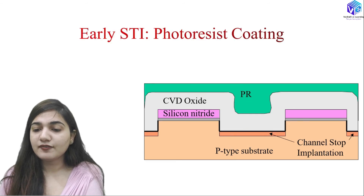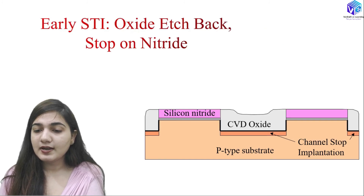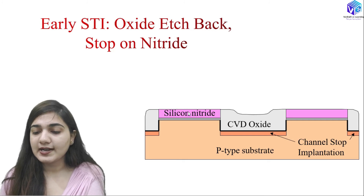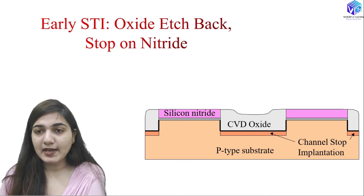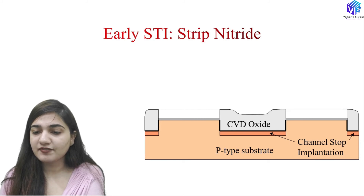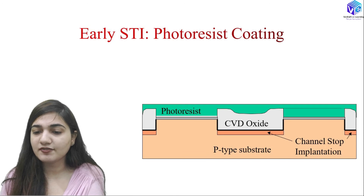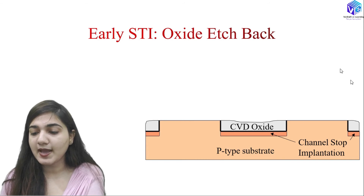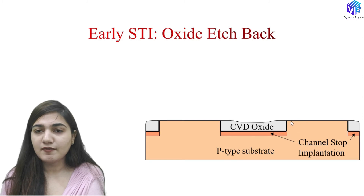After channel stop implantation, we perform CVD oxide growth using chemical vapor deposition to grow the oxide layer. Then we apply a photoresist coating. After that, we strip the photoresist and perform oxide etch-back, stopping on the silicon nitride. When we reach the silicon nitride interface, that is our endpoint. After that we can strip the nitride as well. Another photoresist coating is applied, then the oxide etch-back process gives us a planar even structure with significantly reduced roughness.